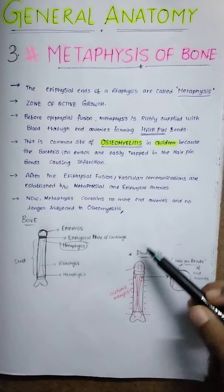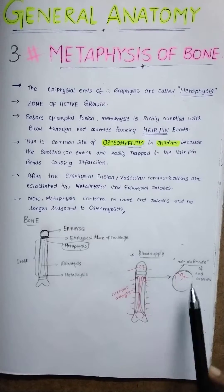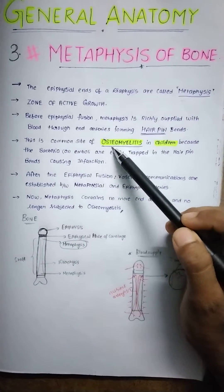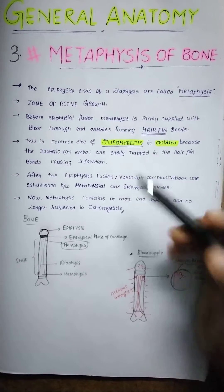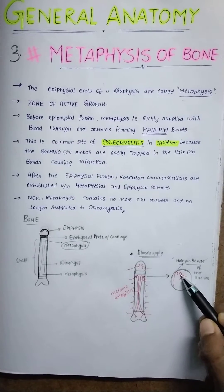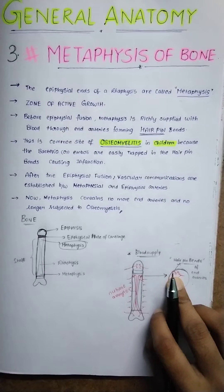This has a clinical correlation, which means this is the common site of osteomyelitis in children. Why? Because whatever bacteria or emboli easily get trapped and lodged in these hairpin bends. So it is easy to lodge here in the hairpin bends and cause infection.